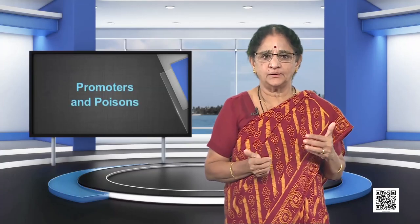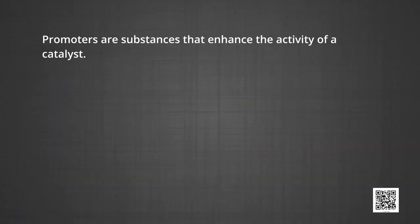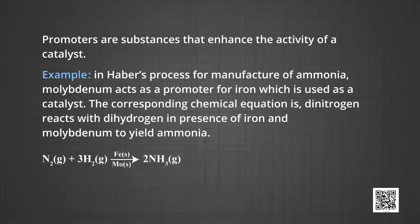You have already studied about catalysts and their functioning in the modules on chemical kinetics. It is important for you to know about promoters and poisons. Promoters are substances that enhance the activity of a catalyst. For example, in Haber's process for manufacture of ammonia, molybdenum acts as a promoter for iron, which is used as a catalyst. Dinitrogen reacts with dihydrogen in the presence of iron and molybdenum to yield ammonia.